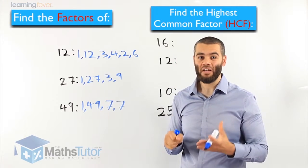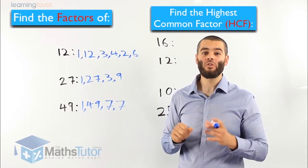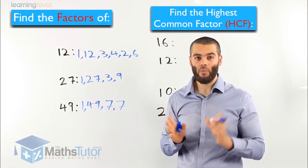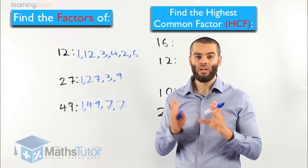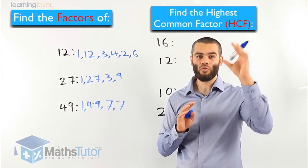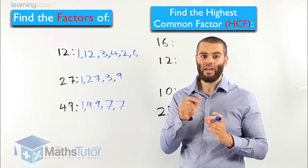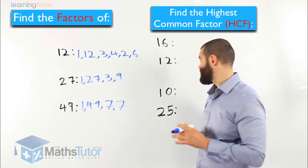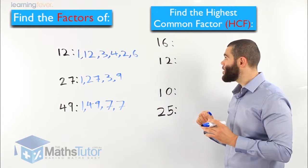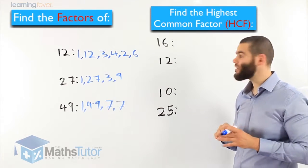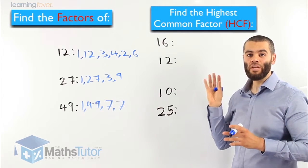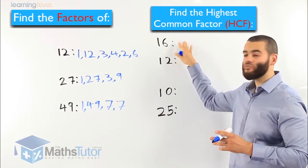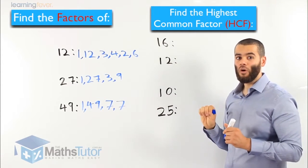Now that we've understood what factors are, sometimes we're asked to find what we call the highest common factor between two numbers. The highest common factor means the highest number that occurs as a factor in two different numbers. Let's see how this is worked out with an example so you get the picture much better. The question says: find the highest common factor of 16 and 12 — meaning, find the highest factor that is in both 12 and 16.